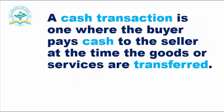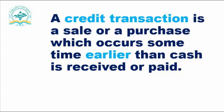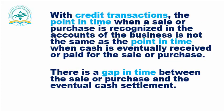A cash transaction is one where the buyer pays cash at the time the goods or services are transferred. A credit transaction is a sale or purchase which occurs sometime earlier than cash is received or paid. With credit transactions, the point in time when a sale or purchase is recognized in the accounts of a business is not the same as the point in time when cash is eventually received or paid. There is a gap in time between the sale or purchase and the eventual cash settlement.